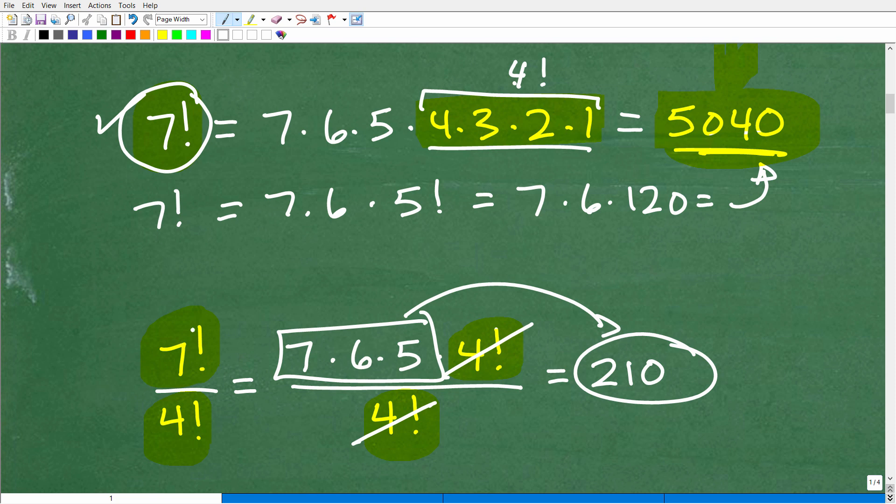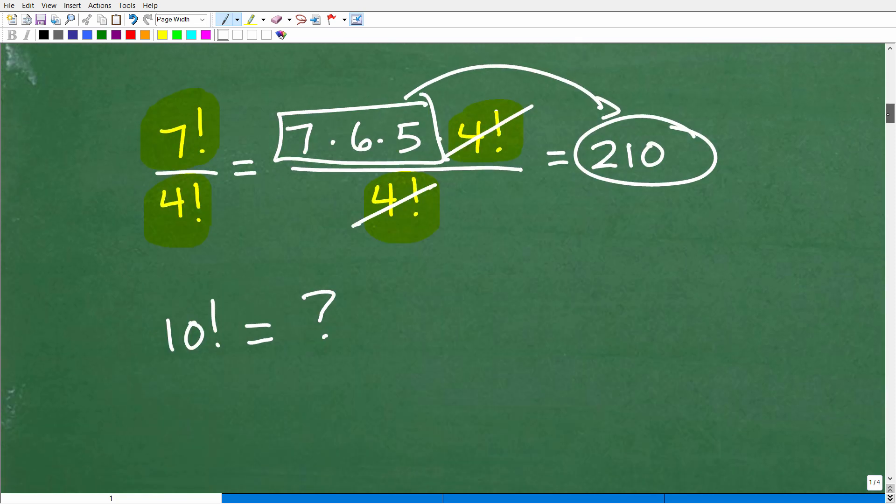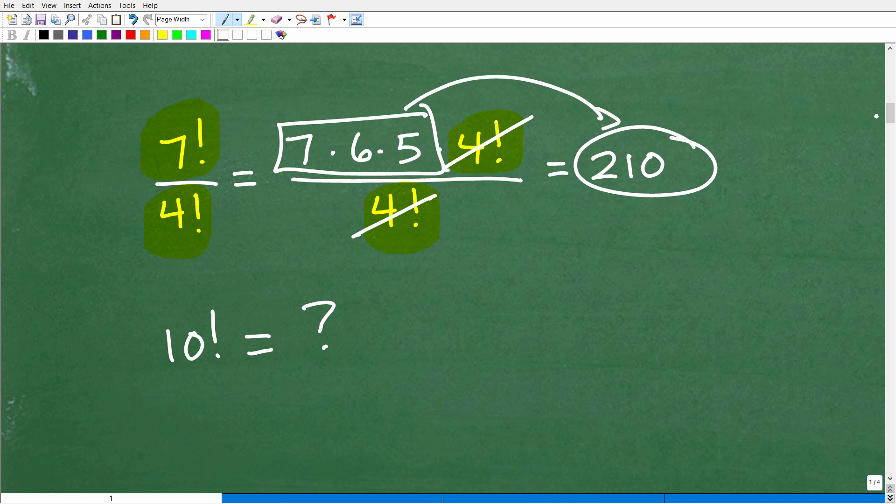So this is kind of an illustration of how we work with factorial in various kind of configurations and how to simplify. So if you're understanding so far everything I'm talking about, then, you know, this is pretty good. You pretty much know the essence of factorial and some of the basic procedures we use to simplify problems with factorial.